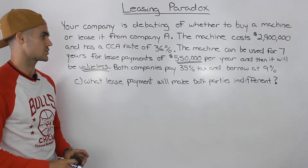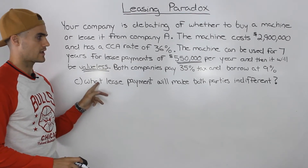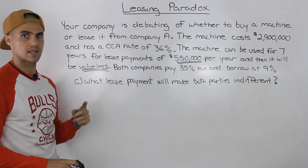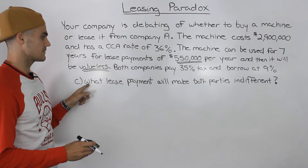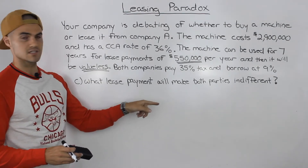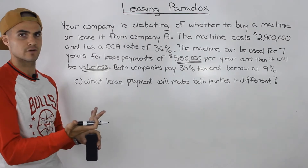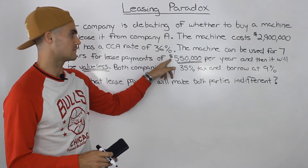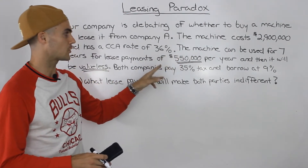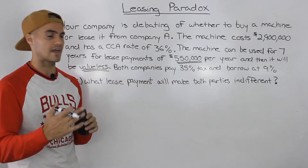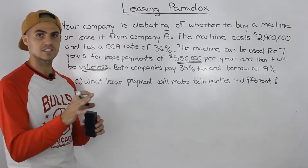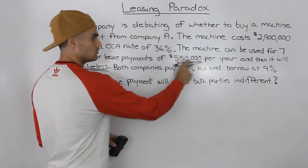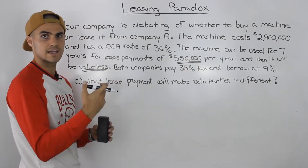To go over that first solution, we're going to add on a question to this scenario — part C. Remember part A and part B we did in the first video. So part C: what lease payment will make both parties — both the lessor and the lessee — indifferent? Because as we concluded in parts A and B, this lease payment of $550,000 is definitely not going to work out. It will work out for the lessee — they have a positive NPV — but the lessor is going to have a negative NPV.